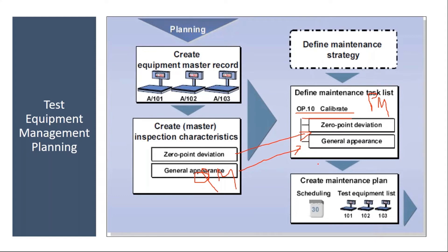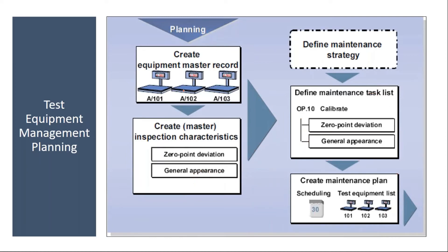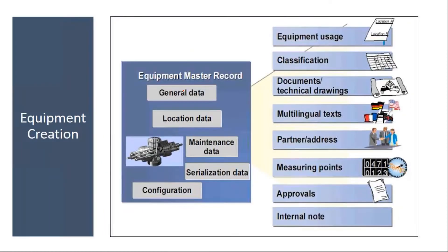After that we will create the maintenance plan, and when we schedule the maintenance plan, orders will come. This is a planning activity. First, we need to start with the equipment creation.